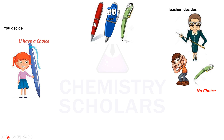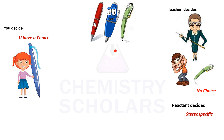On the other hand, think that you are the person who is deciding the color of the pen — so basically you have a choice. In this case, let's consider the teacher as a reactant, the pen is the stereochemistry, and you are the product.